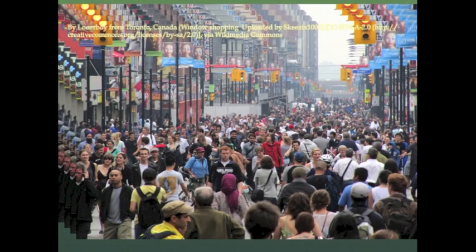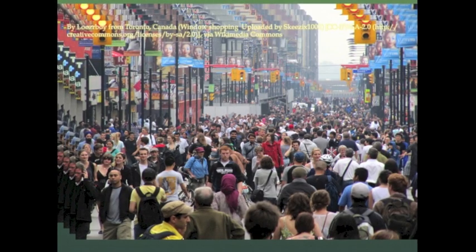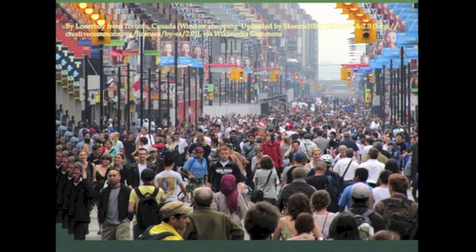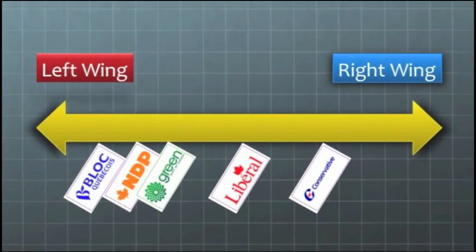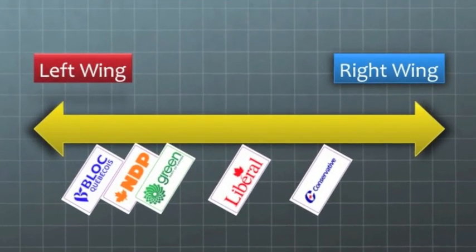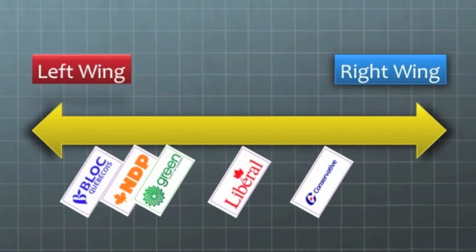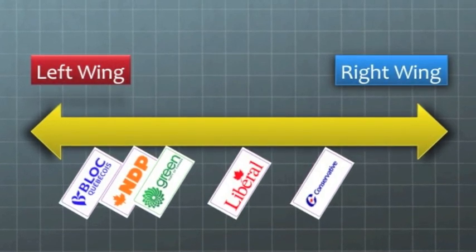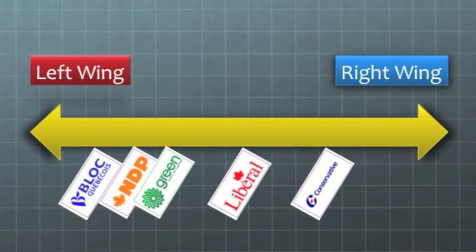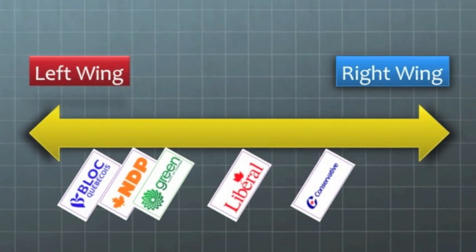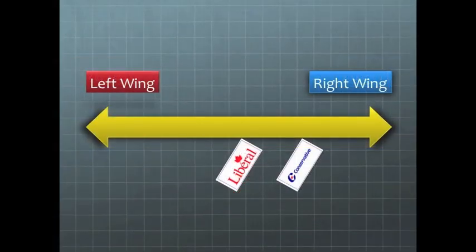By having several different parties to choose from, minority groups can feel like they have a chance to be heard. There are five main federal parties in Canada as of 2014 — I'm mentioning the year because things can change and often do. Right now we have the two dominant parties that have been around in one way or another since Confederation: the Conservatives and the Liberals. The Conservatives, who used to be the Progressive Conservatives or members of the Reform or the Alliance — like I said, things change.